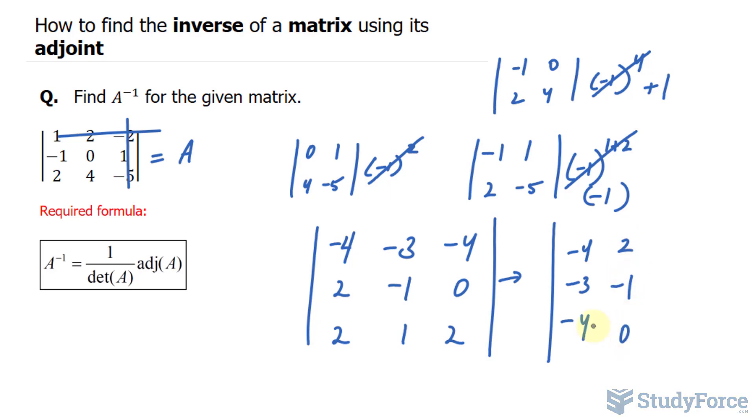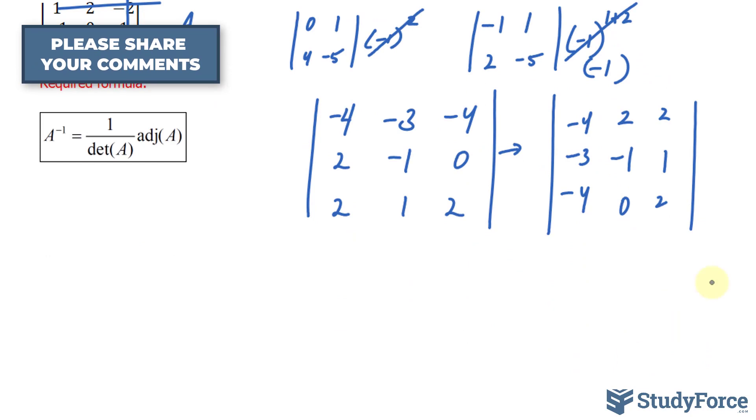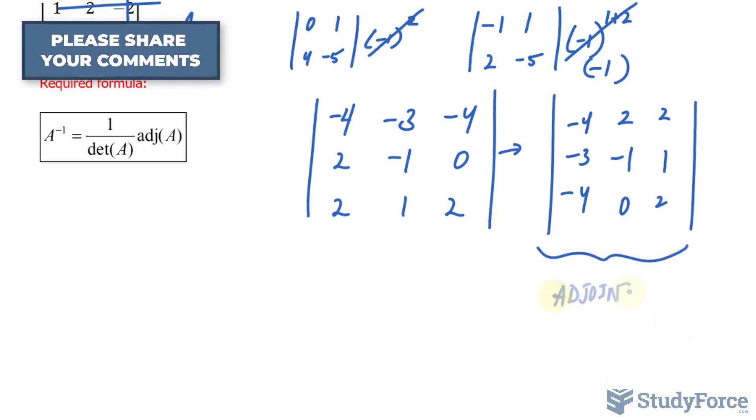This row becomes the column 2, 2, negative 1, 0, and that becomes 2, 1, and 2. This matrix is the adjunct of A.